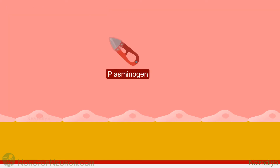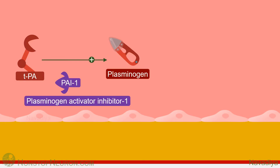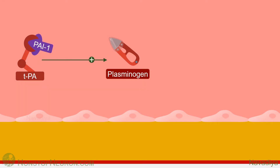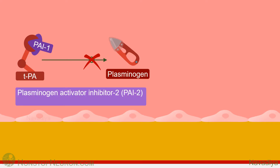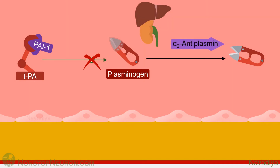Let's see how this is done. We know that plasmin initially exists as the inactive precursor plasminogen, and its activation is dependent on tissue plasminogen activator. However, healthy endothelial cells release plasminogen activator inhibitor 1 (PAI-1), which inhibits plasminogen activator. So there is minimal activation of plasminogen under normal conditions. We also have plasminogen activator inhibitor 2 (PAI-2) for this job; however, that is synthesized from the placenta and becomes important only during pregnancy. Now, if excessive plasmin still gets activated, alpha-2 antiplasmin takes care of it. It is a protease inhibitor released from the liver, kidney, and some other tissues, and it inhibits plasmin.